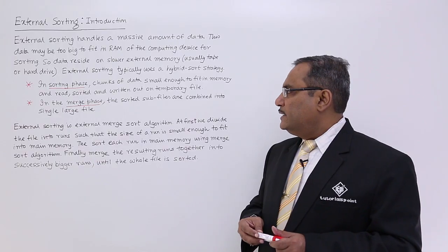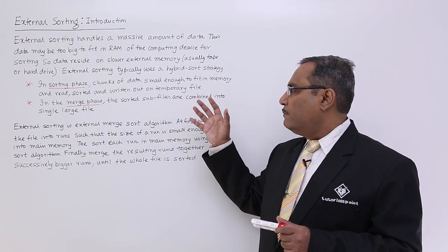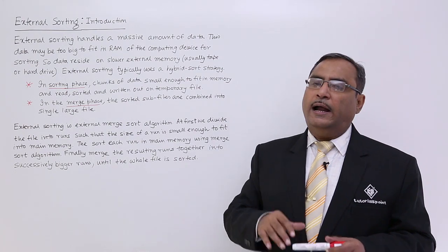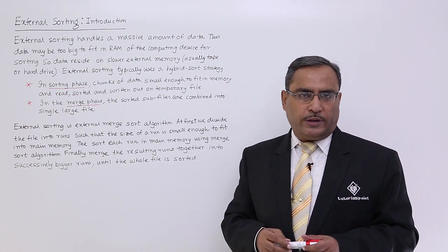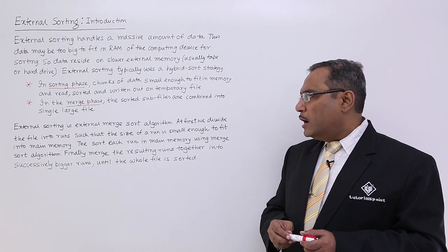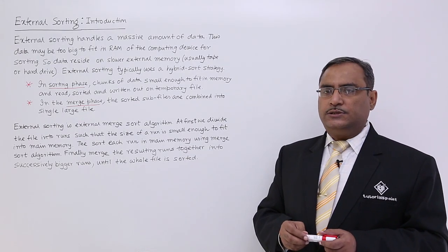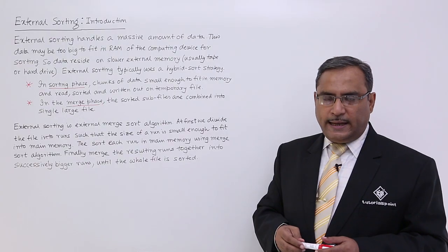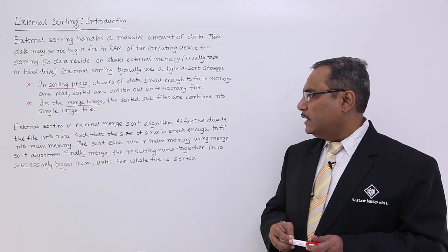In the merge phase, the sorted sub-files are combined into a single large file and will be kept in the external storage. External sorting is external merge sort algorithm. You can also call it as an external merge sort algorithm.